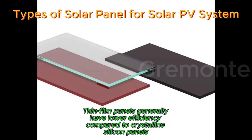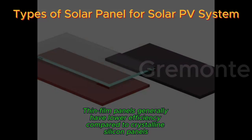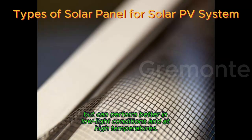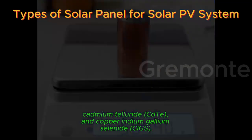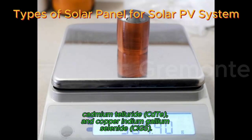such as curved surfaces or portable installations. Thin-film panels generally have lower efficiency compared to crystalline silicon panels, but can perform better in low-light conditions and at high temperatures. Types of thin-film solar panels include amorphous silicon (a-Si), cadmium telluride (CdTe), and copper-indium gallium selenide (CIGS).